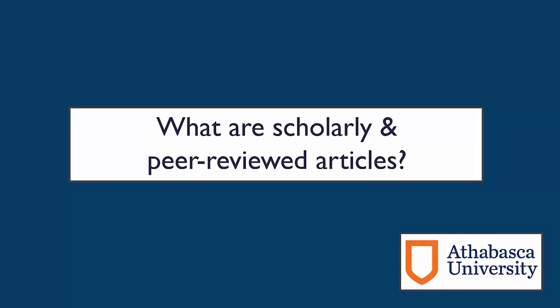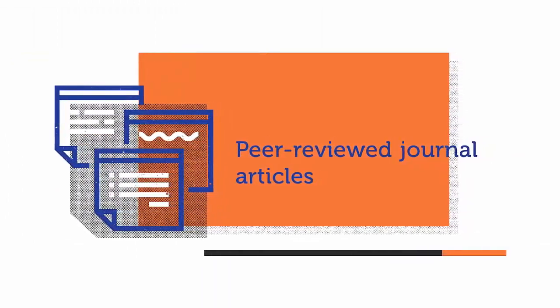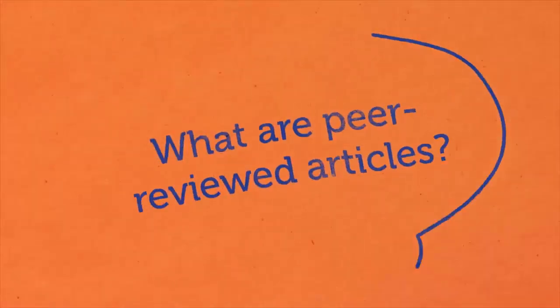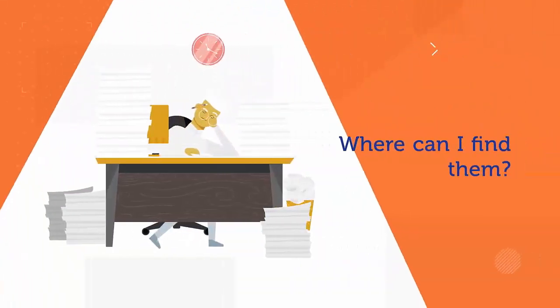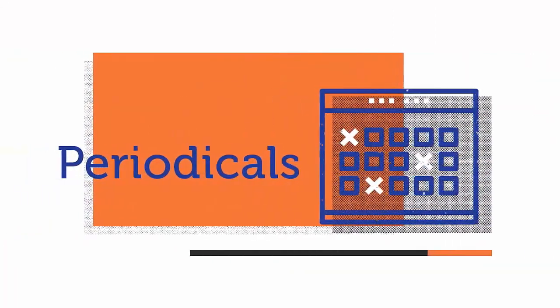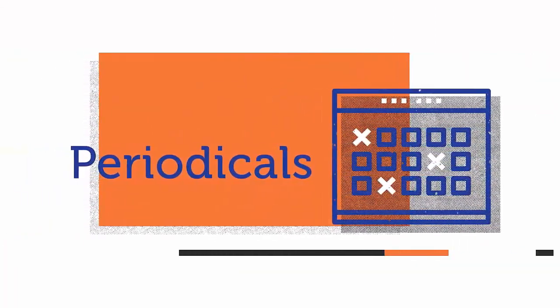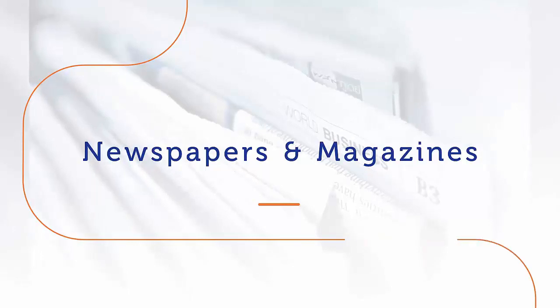What are scholarly and peer-reviewed articles? Your course instructor will almost certainly ask you to read and cite peer-reviewed articles for your research and assignments. But what are peer-reviewed articles, and where do you find them? First of all, let's cover some terminology. Periodicals are collections of articles that are published on a regular or periodic basis. Periodicals include items such as magazines, newspapers, and scholarly journals.